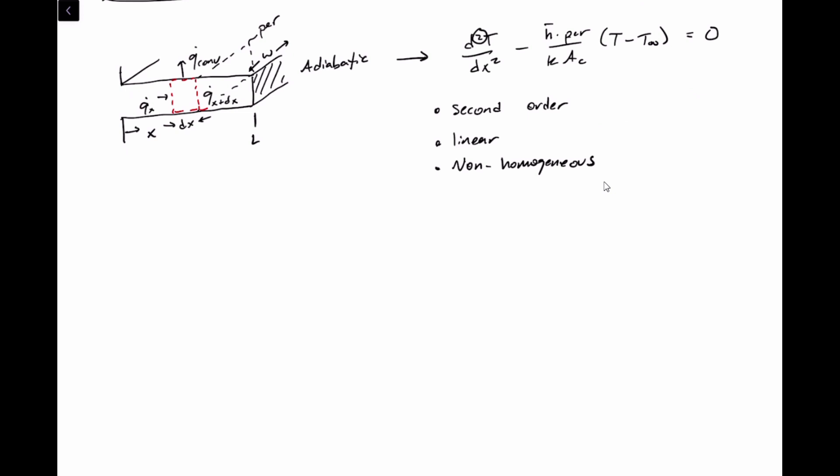We can represent this situation using the ordinary differential equation shown on the upper right, which is the second derivative of temperature with respect to position, minus h-bar (the convection coefficient) times the perimeter of the fin in the direction normal to heat transfer, divided by the conductivity k and the cross-sectional area of the fin Ac, times the temperature at any position x minus the ambient temperature, denoted T-infinity.